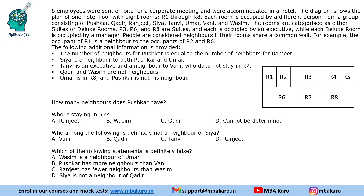The rooms are categorized as two types: either suites or deluxe rooms. R3, R6, and R8 are suites — the larger rooms — while the others are deluxe rooms. Suites are occupied by executives and deluxe rooms by managers. People are considered neighbors if their rooms share a common wall. For example, R1 is a neighbor of R2 and R6.